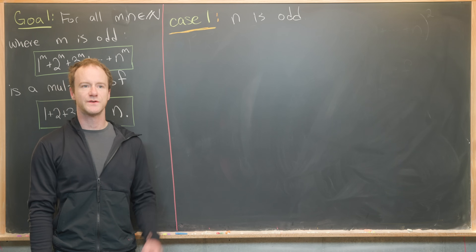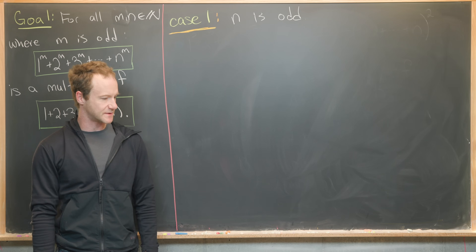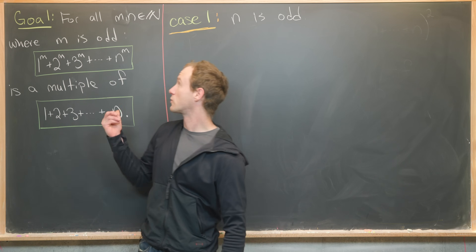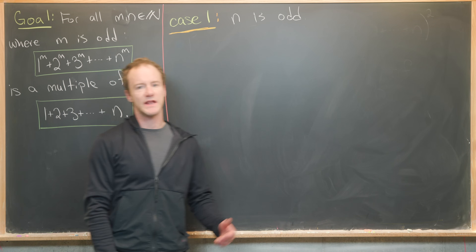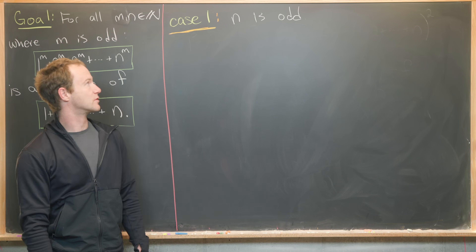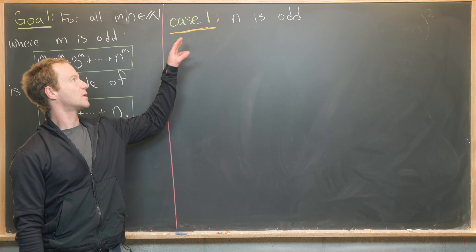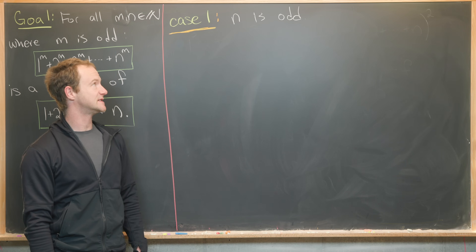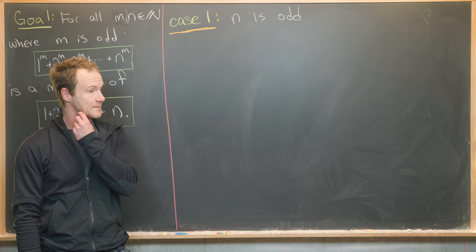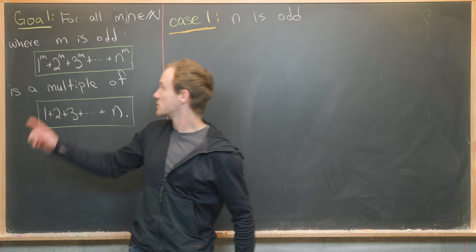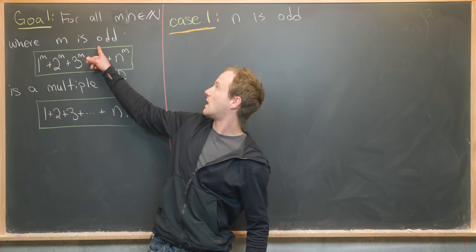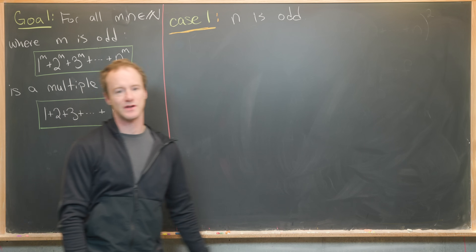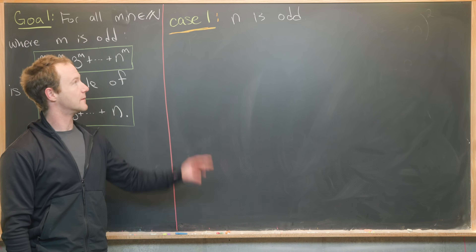Now let's jump into the solution. We're going to break the proof into two cases. The first case is when n is odd. Notice we're assuming m is always odd, but n can be any natural number — even or odd.